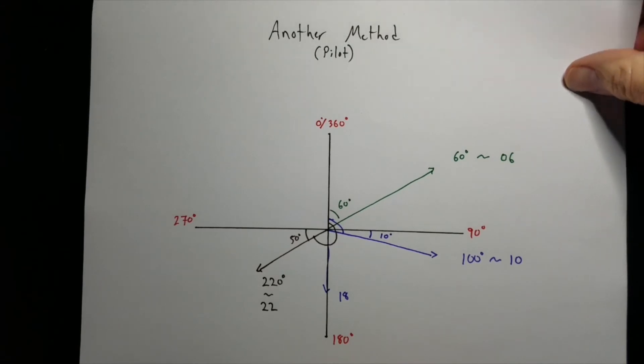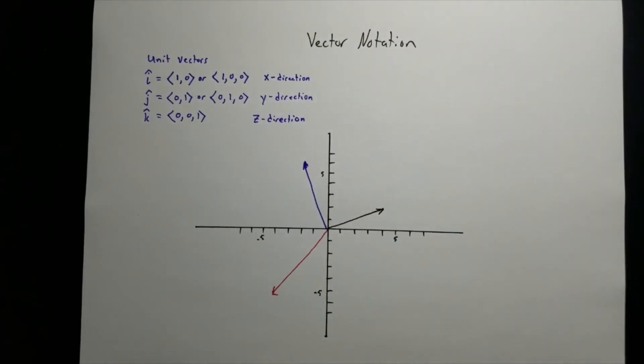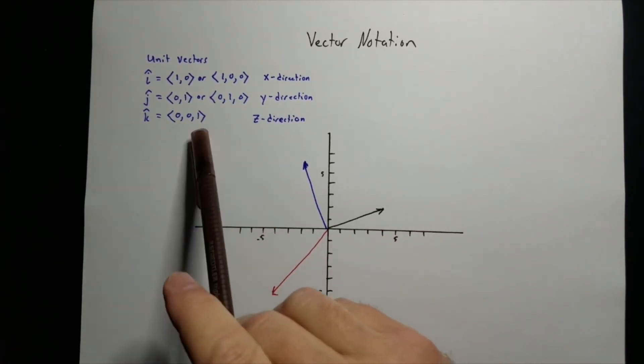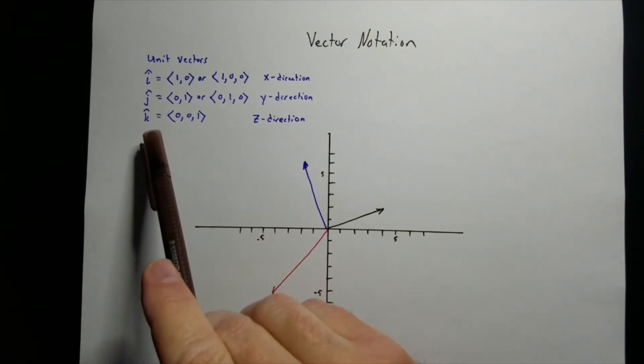What if we really get mathy? There's something known as vector notation that can get pretty ugly to start off with. But if you get used to it, it's actually pretty handy. They use what's called unit vectors. And we got i hat, j hat, and k hat.